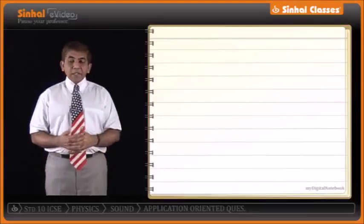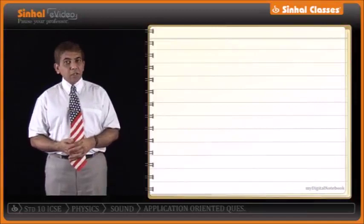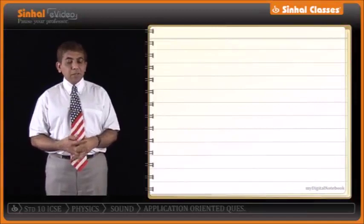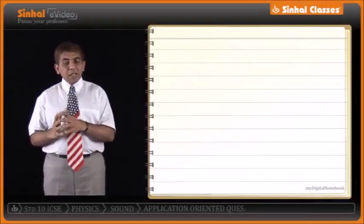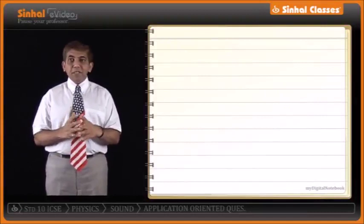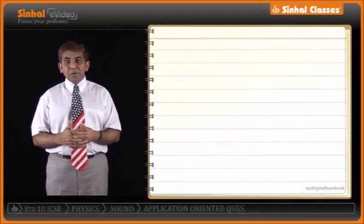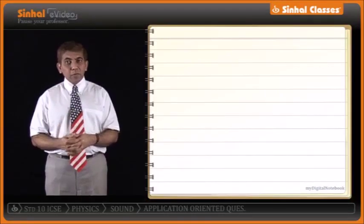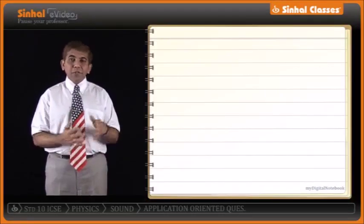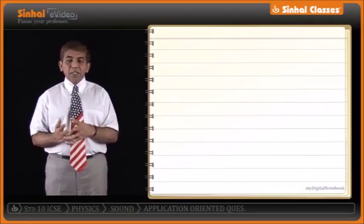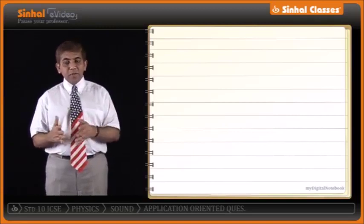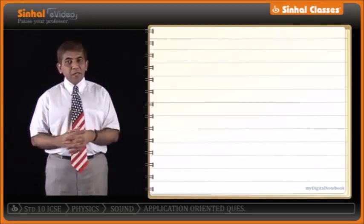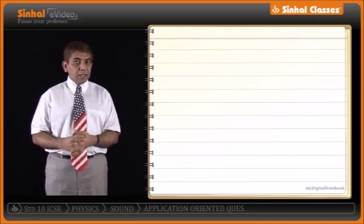Now we go ahead with the solved numericals. This chapter has large coverage of numericals, mostly on echo. The first part — v equals f lambda — was covered in Class 9, so here we will focus on numericals based on echo.